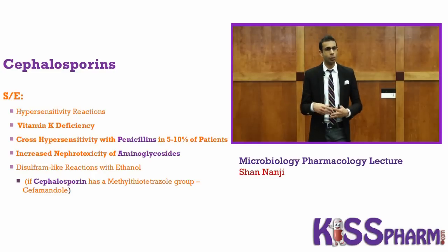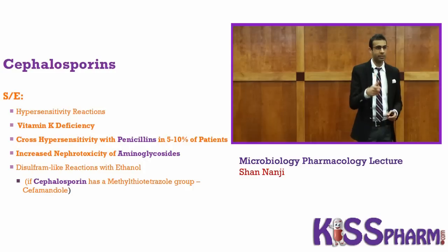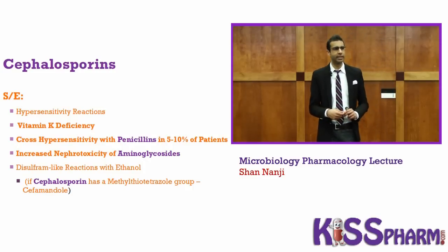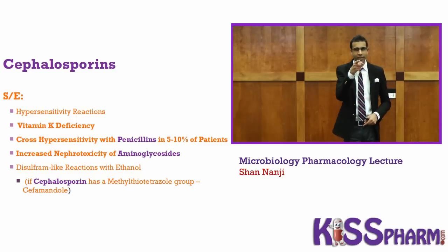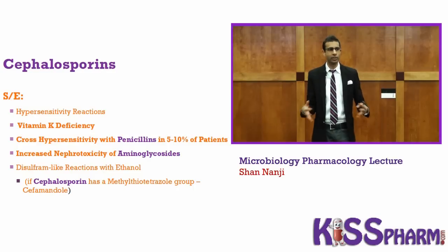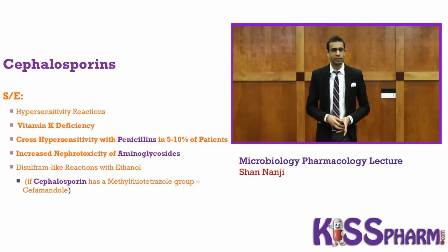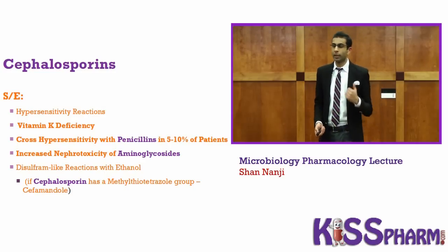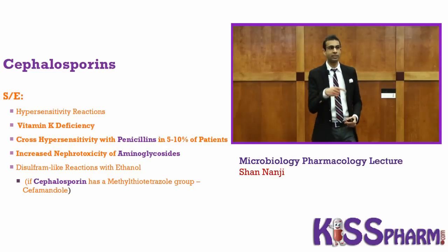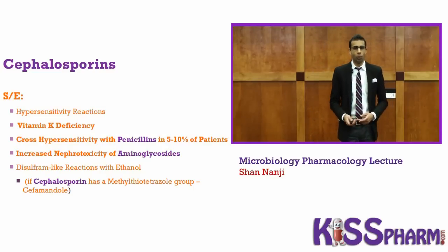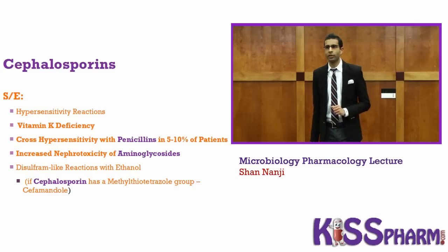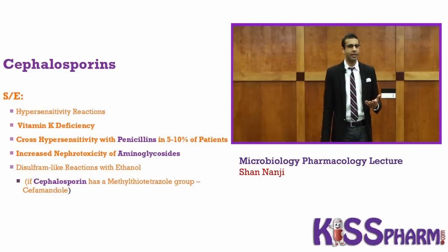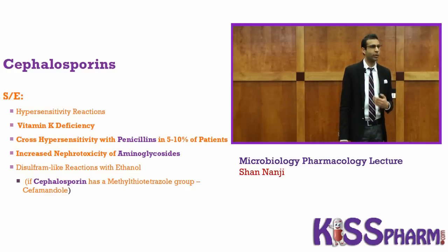Cephalosporins have cross-hypersensitivity with penicillins in 5–10% of patients — that's a lot of people. They may ask which drug is contraindicated when someone is on this drug, because cephalosporins and penicillins can react across hypersensitivity. We also said nephrotoxicity gets worse with cephalosporins. Cephalosporins can also cause disulfiram-like reactions with ethanol, which we'll cover in our hematology lecture.